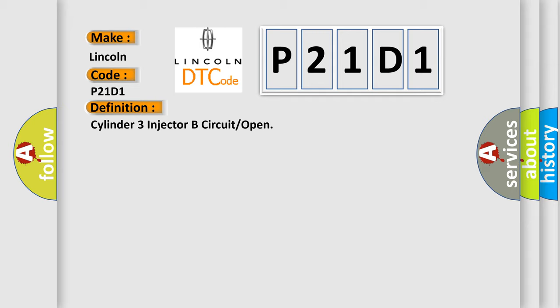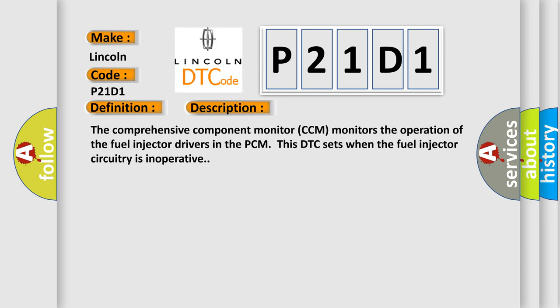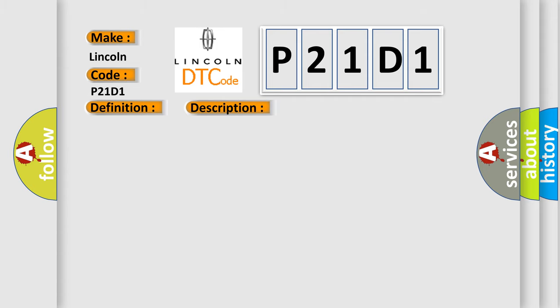Here is a short description of this DTC code. The comprehensive component monitor (CCM) monitors the operation of the fuel injector drivers in the PCM. This DTC sets when the fuel injector circuitry is inoperative. This diagnostic error occurs most often in these cases: VPWR Circuit Open, INJ3 Circuit Open, Damaged Fuel Injector 3, Damaged PCM. The INJ3_F PID flags equals yes.